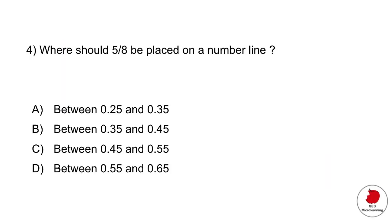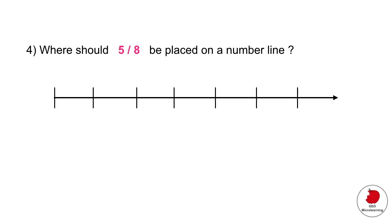Question four is going to test three skills: your ability to understand fractions, your ability to understand decimal points and how decimals and fractions translate, and your ability to place numbers on a number line. They're asking where should 5 eighths be placed on a number line.